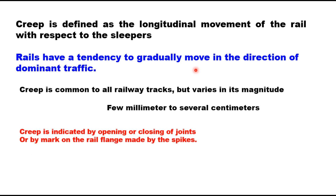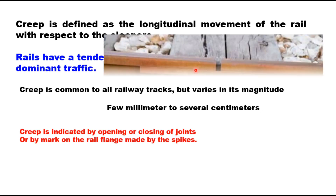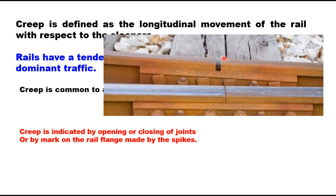The creep in the field is indicated by opening or closing of the joints. The expansion gaps are open to their limits at the point from where the creep starts, and in the direction of the creep they get closed. Sometimes creep is also indicated by marks on the rail flange and rail web made by the spikes. When the rail slides on the sleepers, these spikes make scratches or marks on the rail flange or web, indicating movement of the rail.